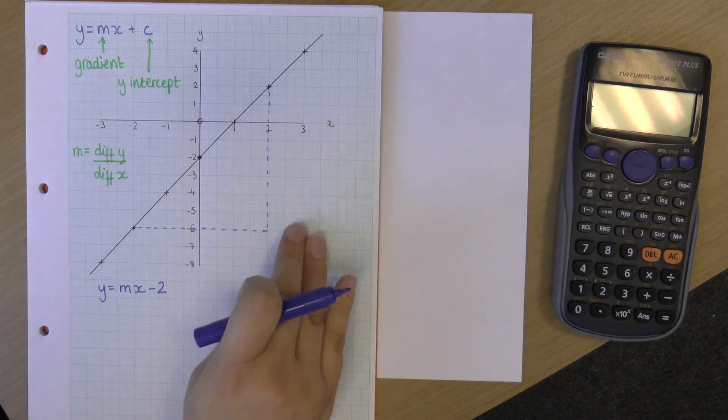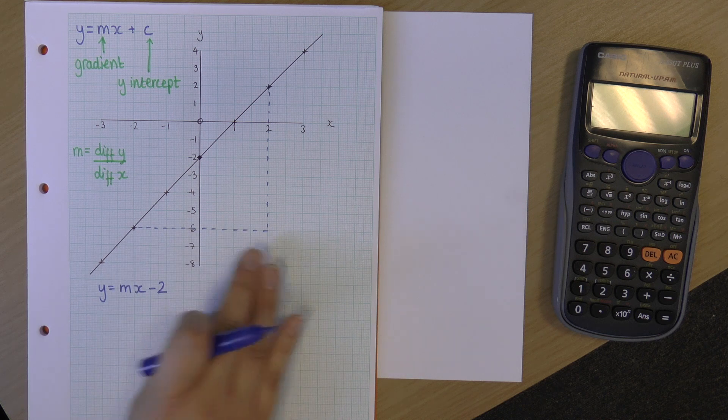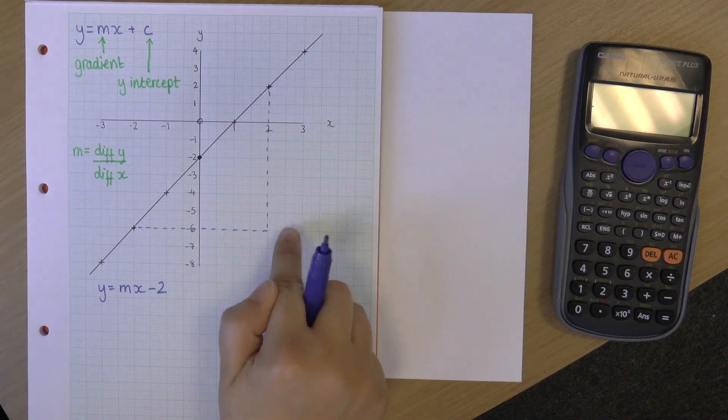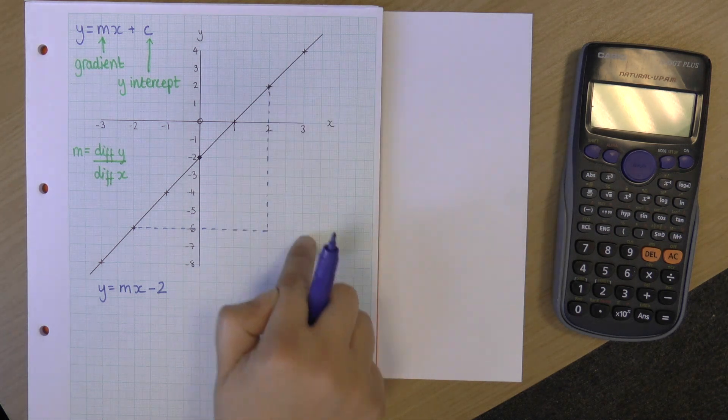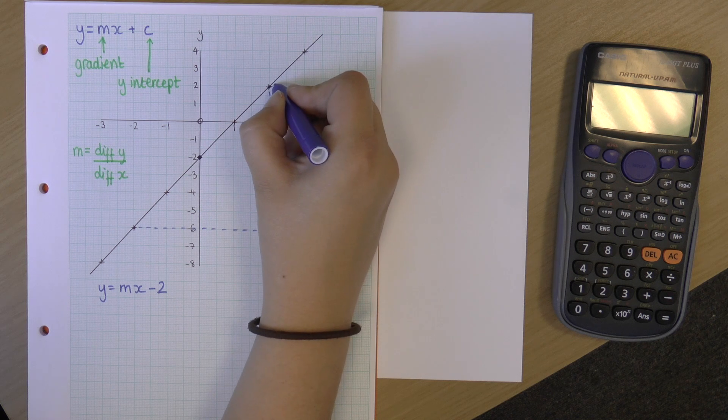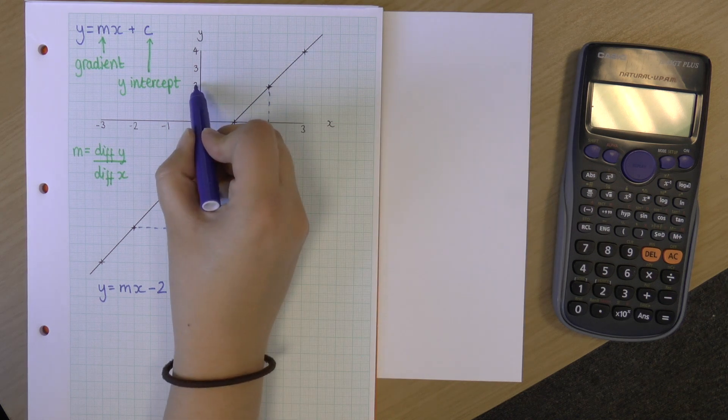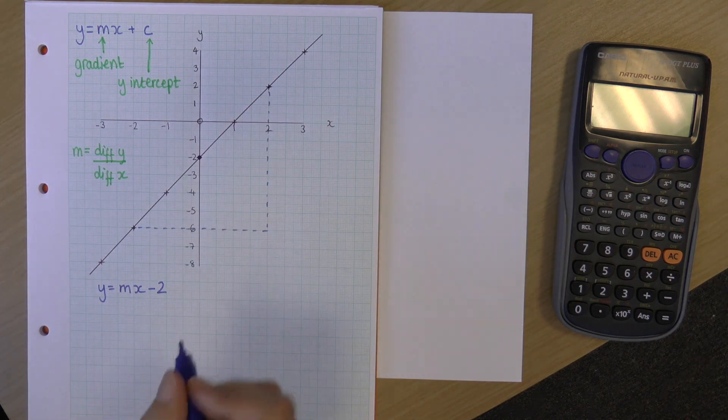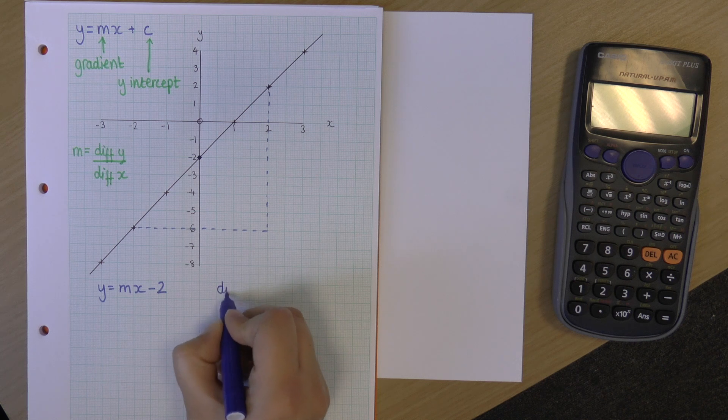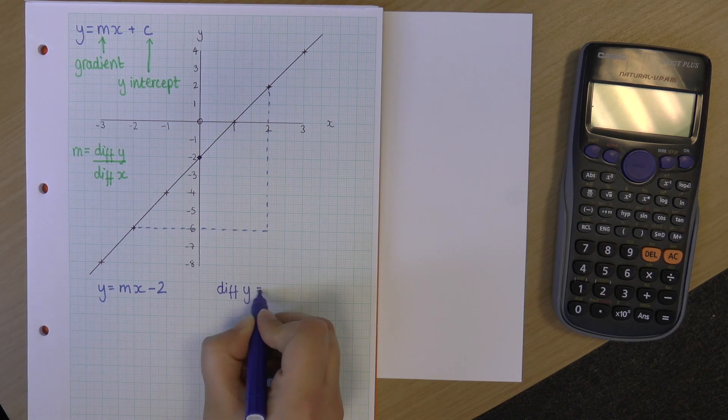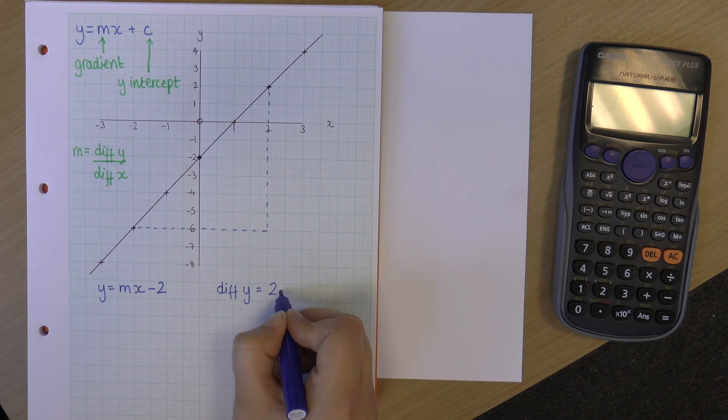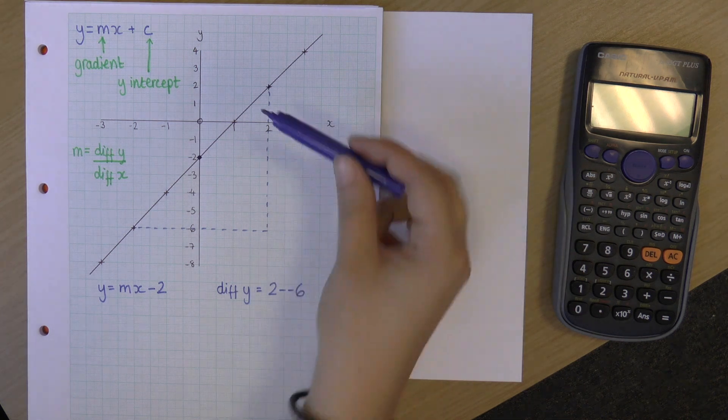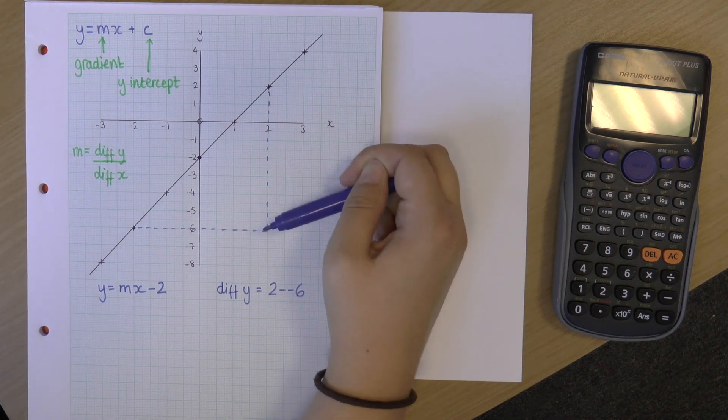Now, each side of this triangle has a certain length, and those are my differences in y and x. So, the length of this side goes from 2, so at the value of y equals 2, down to minus 6. So, my difference in y is 2 take away minus 6. So, I'm finding the difference between 2 and minus 6. So, I'm taking away minus 6 from 2.